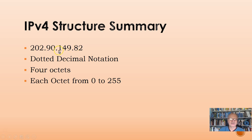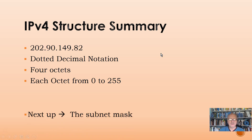Here's our summary: 202.90.149.82 — we call it dotted decimal notation. It has four octets, and each octet, since these are eight bits, can have anywhere from zero to 255. We can't go higher than that because eight ones equals 255. And next up, we will be talking about something we call the subnet mask. Thank you for watching.